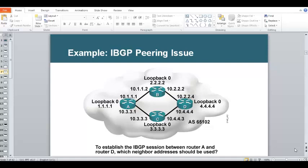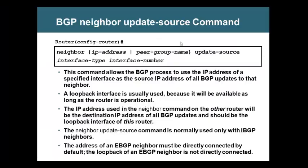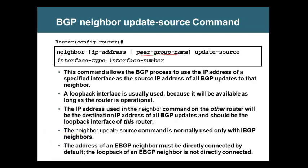We have something called peer group that appears in many pages. When we configured BGP, we said neighbor IP address, update source, interface — but we did not speak on this one. Peer group — what is this? You can use either peer group or IP address. It means it is talking about the neighbor's IP address. That's why it is called a peer group, or neighbor group.